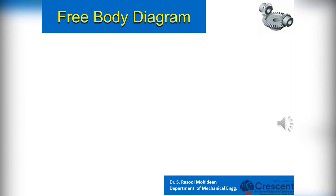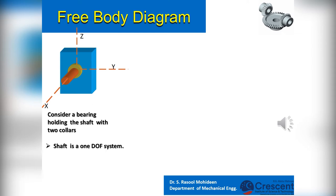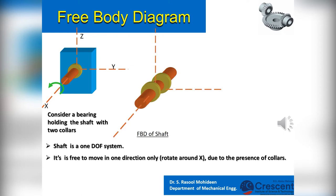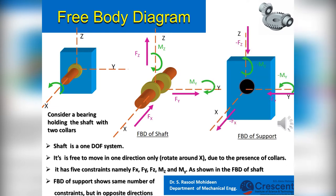We can further understand constraint forces with a free body diagram. A free body diagram shows an isolated component of a machine with the exhibition of forces acting on it. Consider a bearing holding the shaft with two collars. The shaft is a single degree of freedom system — it is free to rotate around X only, due to the presence of collars. Hence it will have five constraints, namely FX, FY, FZ, MZ, and MY. The free body diagram of the support also shows the same number of constraints but in opposite directions.